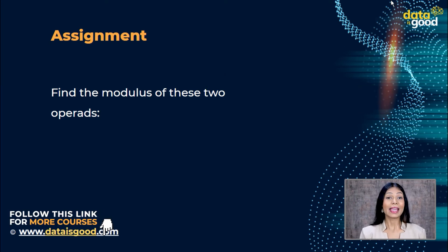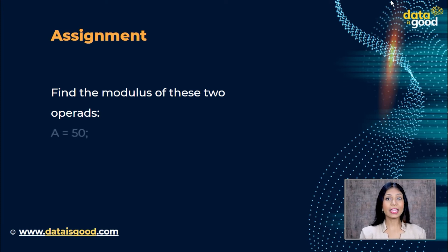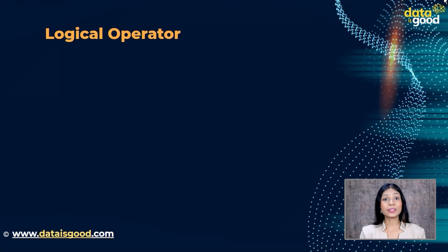There is an assignment for you: find the modulus of these two operands — a equal to 50, b equal to 30. But wait, the operator concept does not complete here. In today's lecture we will also be talking about the next type of operator, which is the logical operator.